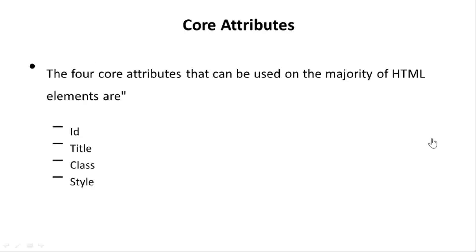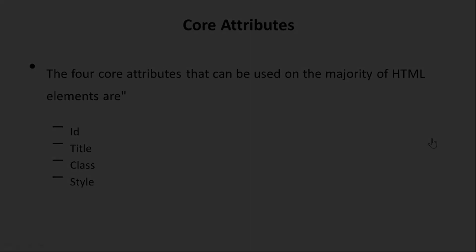The four core attributes are ID, Title, Class, and Style. In the next session, we will create code applying these four attributes and discuss them in detail. So we will discuss the class attribute and the remaining attributes in the next lesson. Thank you.